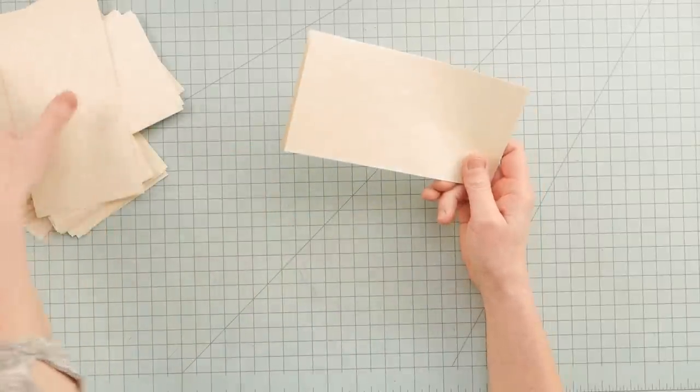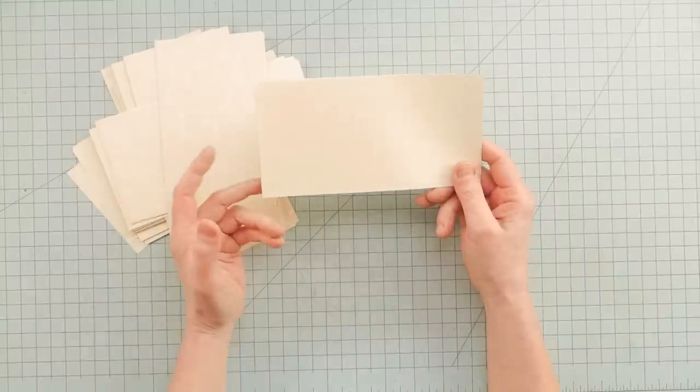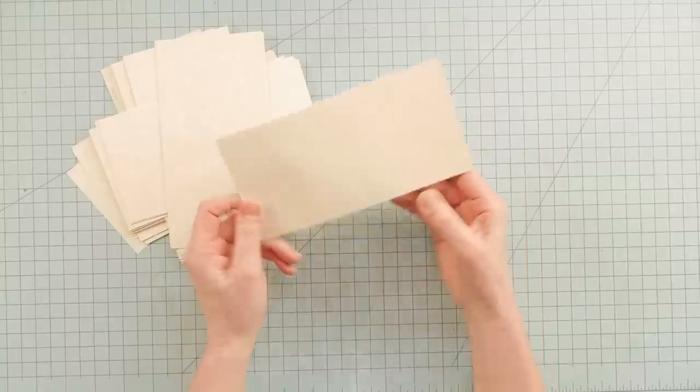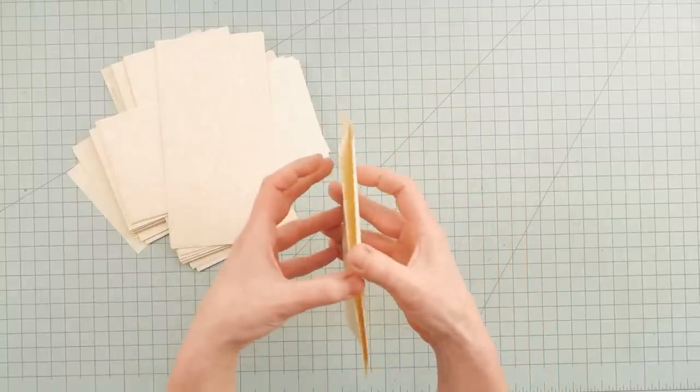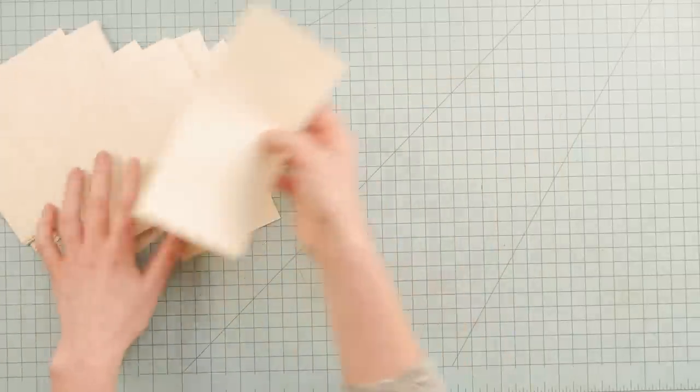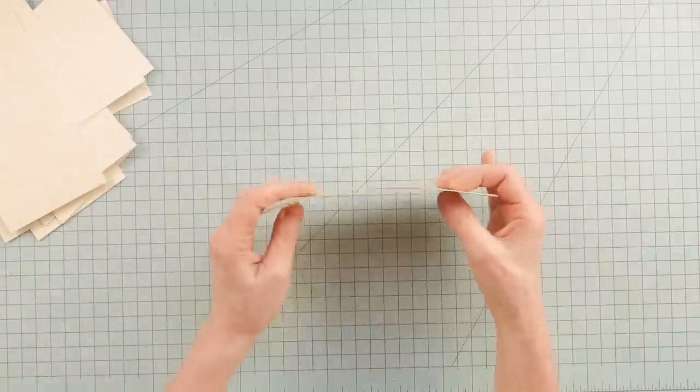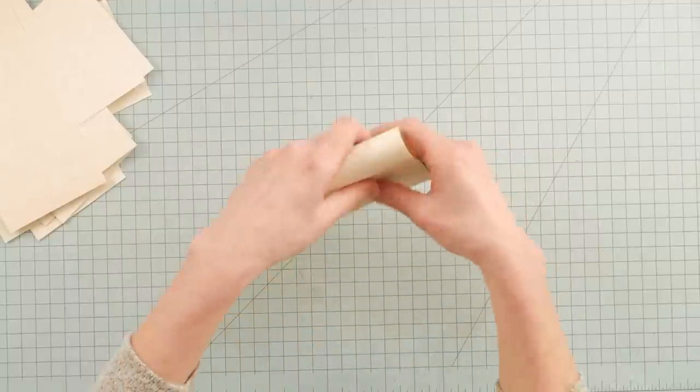So what these are, this is some offcuts that I had a stack of and I thought, might as well do something with them. I separated them into three for each little pile. So I'll have three in a signature, I guess. But that's arbitrary, you can do whatever you want. I just chose three.